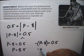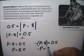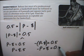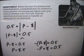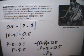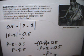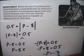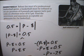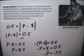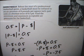Now distributing the negative sign, I get negative p plus 8 is equal to 0.5. When I subtract 8 from both sides, I get negative p is equal to negative 7.5. Dividing both sides by negative 1, I get p is equal to 7.5. So this is my OR condition: p is equal to 8.5, or p is equal to 7.5.